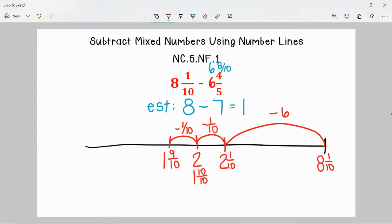So I have subtracted 2 tenths out of the 8 tenths I need to subtract. Now that I am looking at 1 and 9 tenths it would be pretty easy to go ahead and just subtract the rest of the tenths. I know that is 6 more tenths that I need to subtract, and I know that 9 tenths minus 6 tenths would be 3 tenths. So I would end up at 1 and 3 tenths. So this lets me know that the difference between 8 and 1 tenth and 6 and 4 fifths is 1 and 3 tenths. We had estimated that our answer would be around 1 but a little bit more and that is true of 1 and 3 tenths.